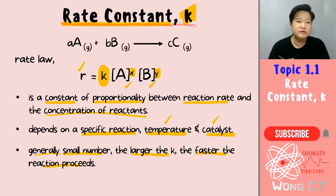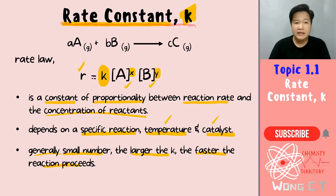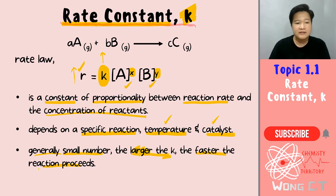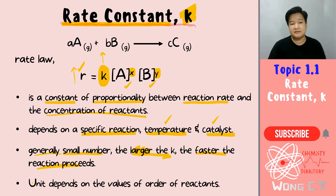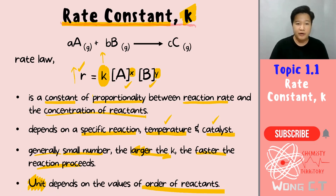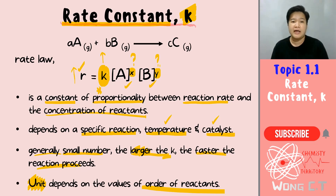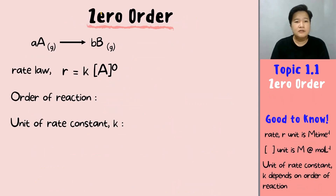The rate constant is generally a small number, but sometimes it can also be a large number. From the equation itself, when k increases, the rate of reaction increases — they are directly proportional. So the larger the k value, the faster the reaction proceeds and the higher the rate. Most importantly, the unit of your rate constant will depend on the order of the reactant.